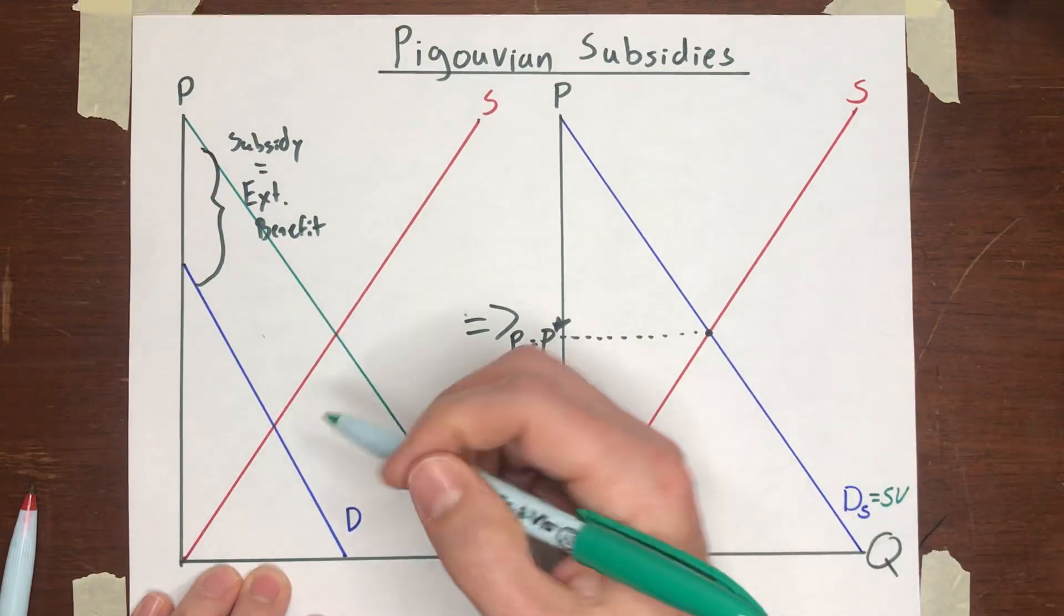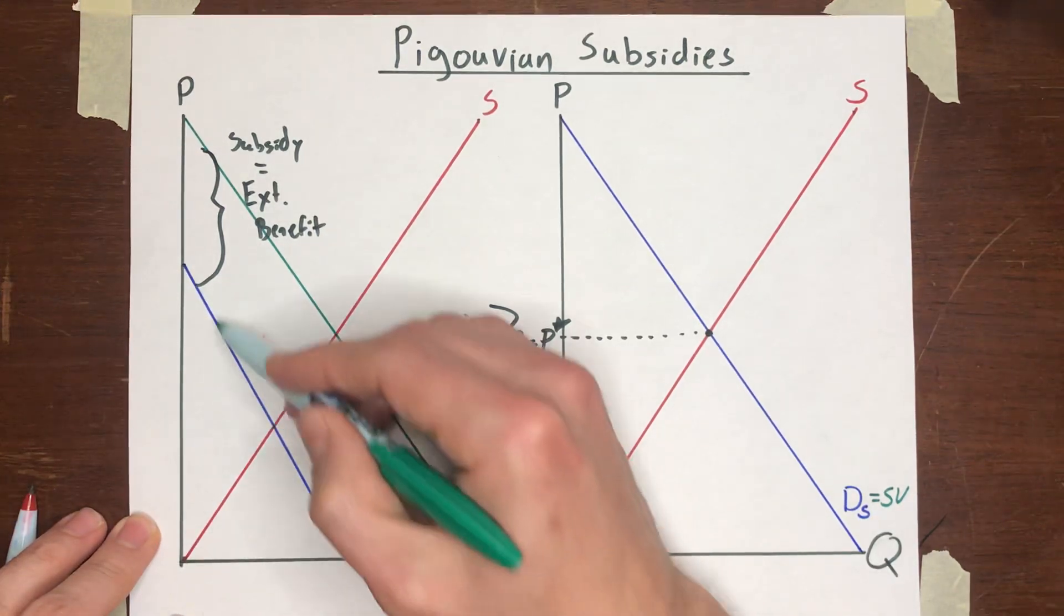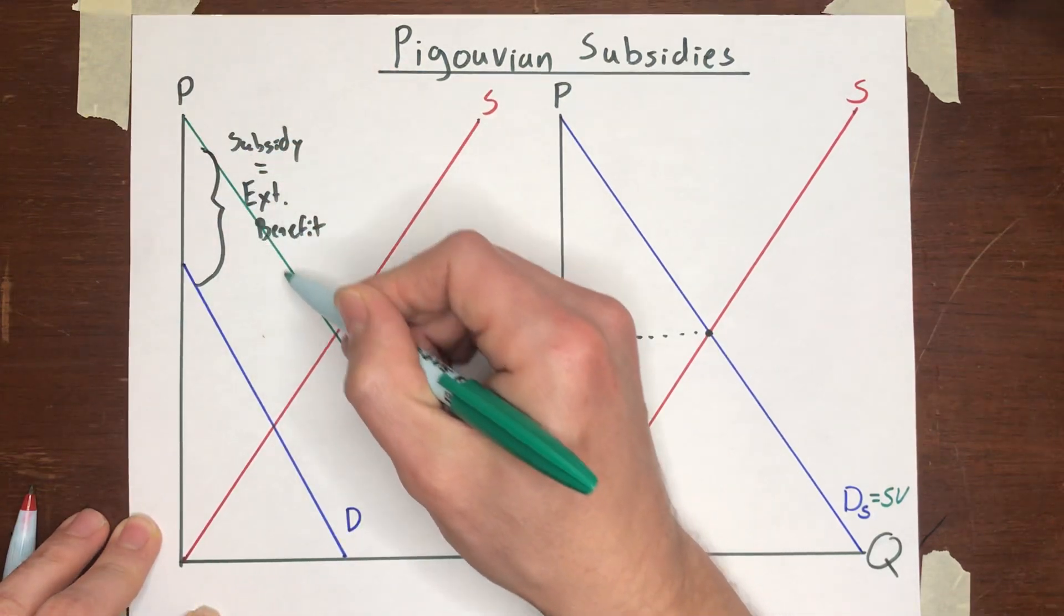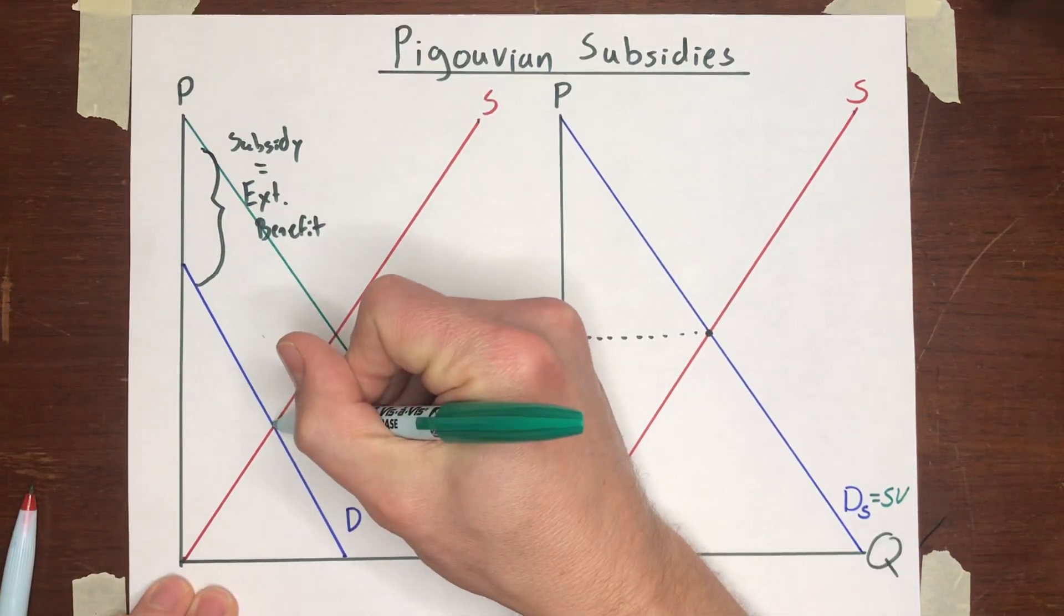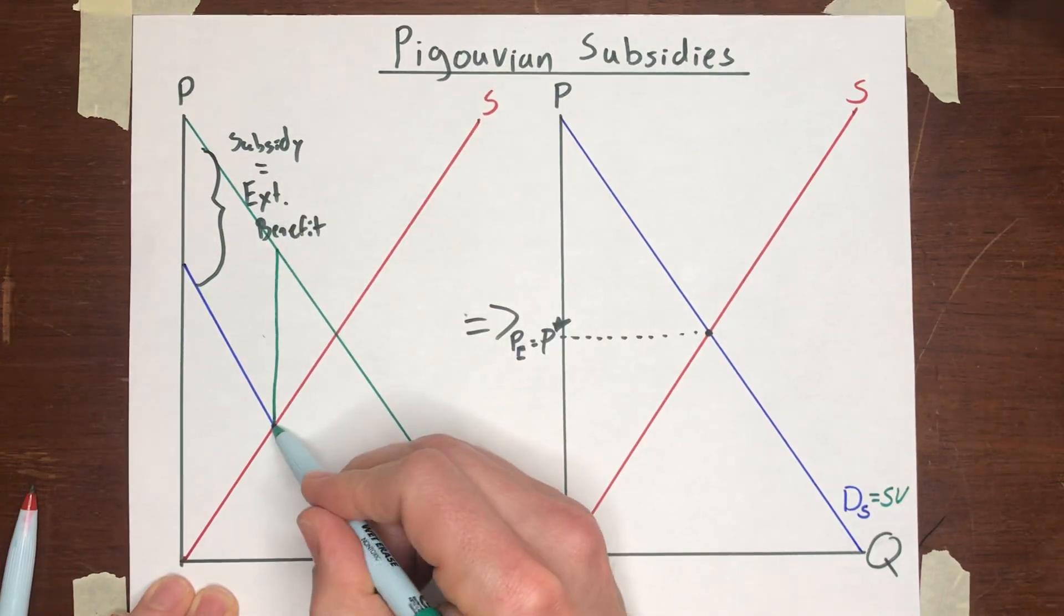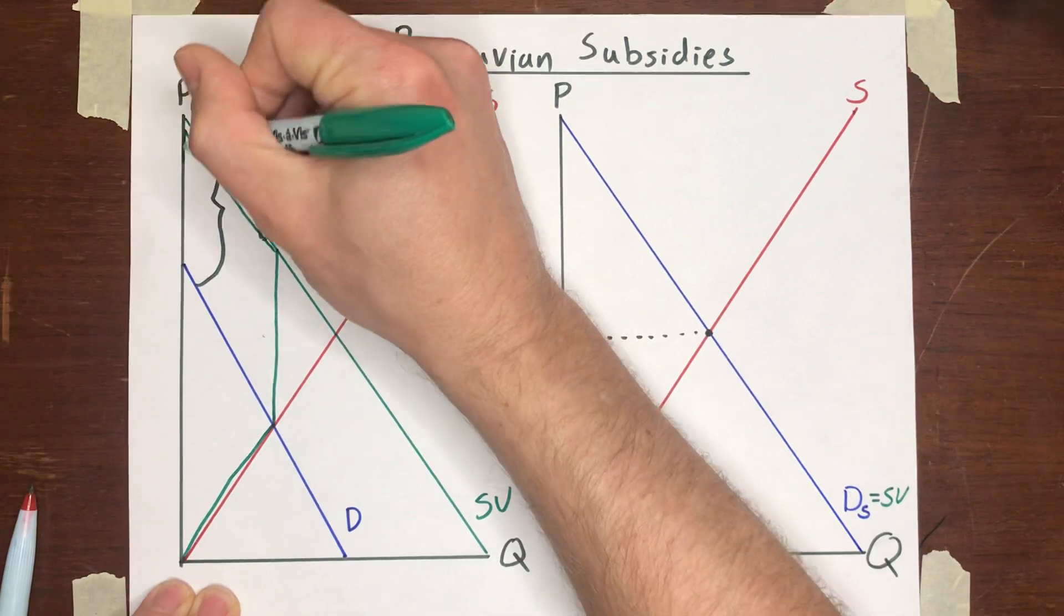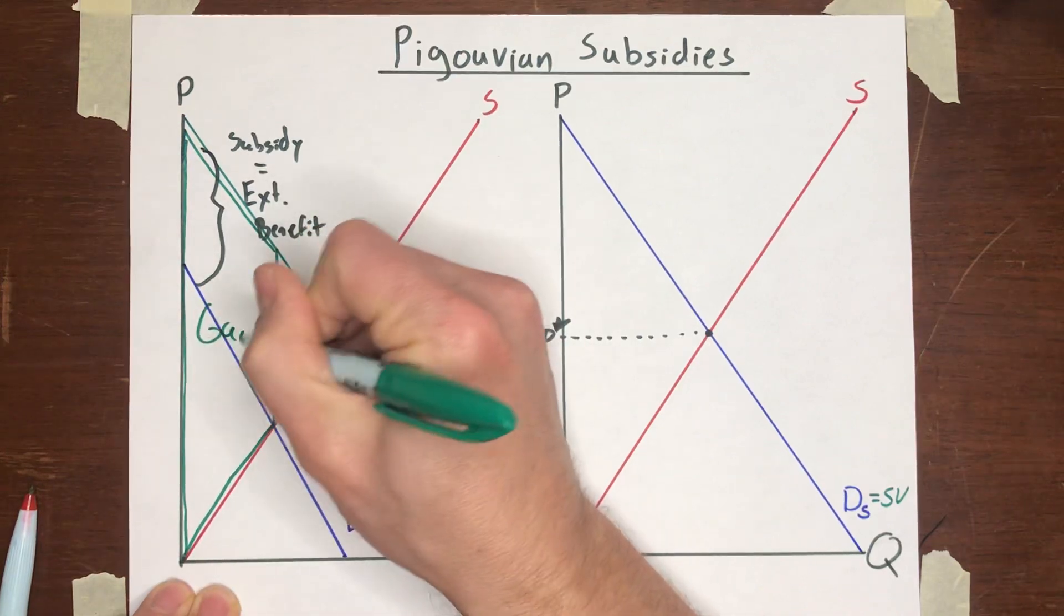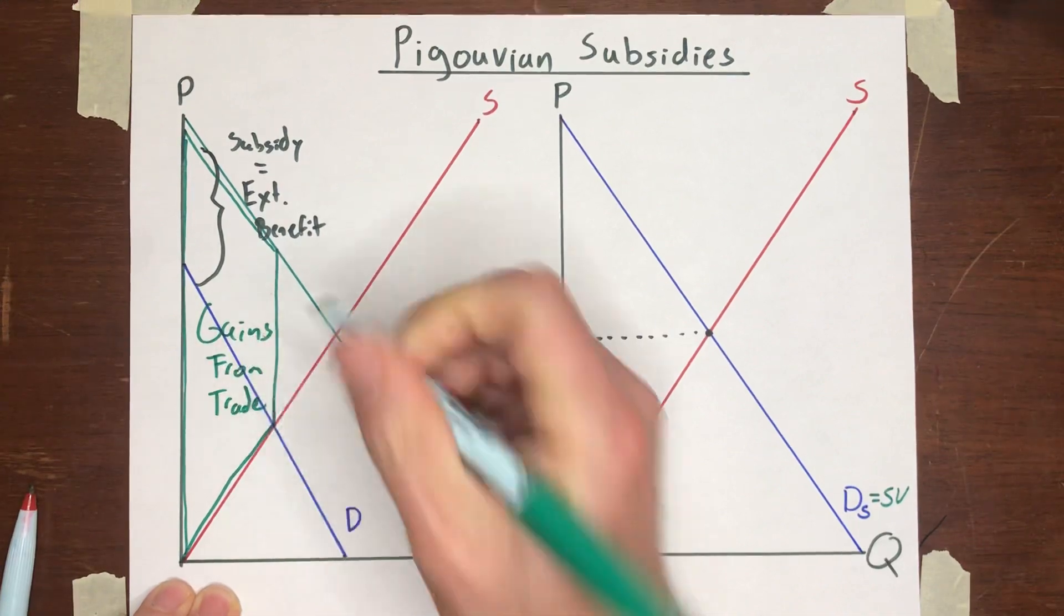And basically what's happening in this case is the buyers and sellers are acting like this is the only area of gains from trade. But in fact, we're interested in everything under that social value curve and above the social cost curve. So left to their own devices, buyers and sellers will stop trading at this point. And so the gains from trade are this shape here. It's kind of a triangle with the right hand corner clipped off. That's the gains from trade.